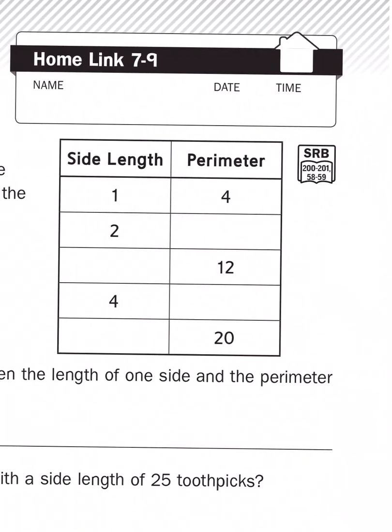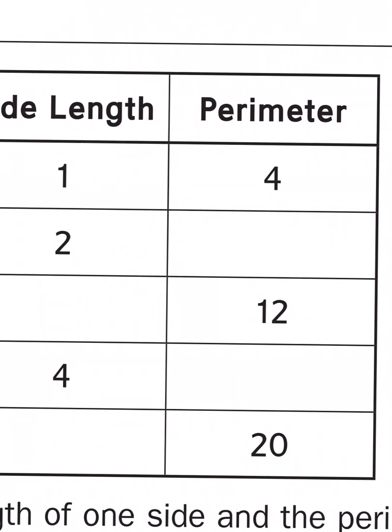If each side has two toothpicks per side and there are four sides to a square, all I'm doing here is multiplying two times four, and of course it's going to give me eight.